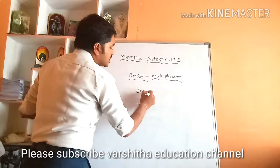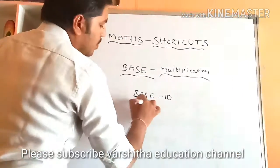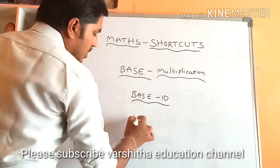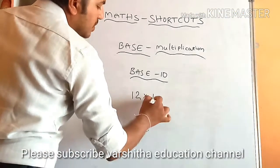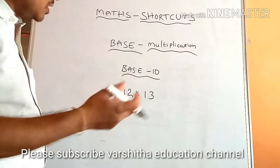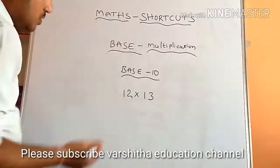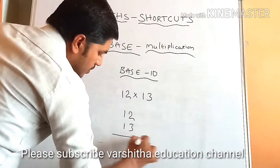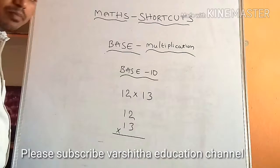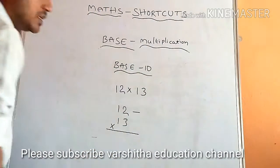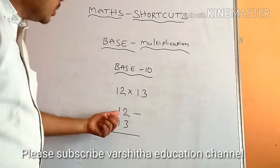base is 10. If you take any base value is 10, how to multiply? I am going to take 12 multiplied with 13 - a two-digit number multiplied with a two-digit number. So once you see here, it's 12 and 13, they should be multiplied. What is the calculation of this 12? The base is 10, so above 10, how